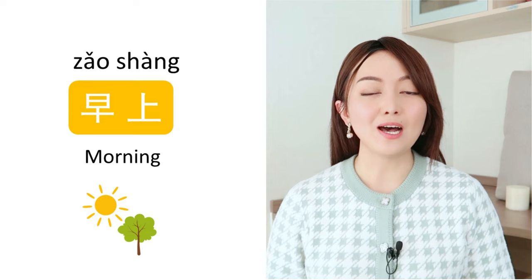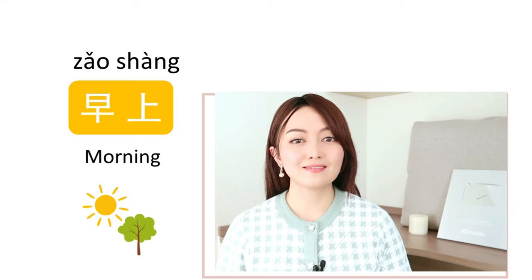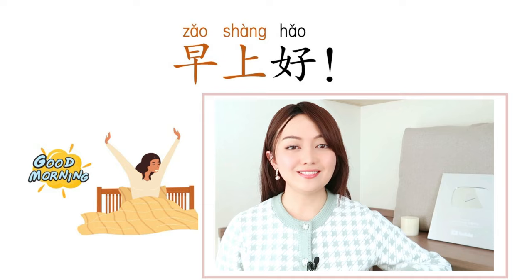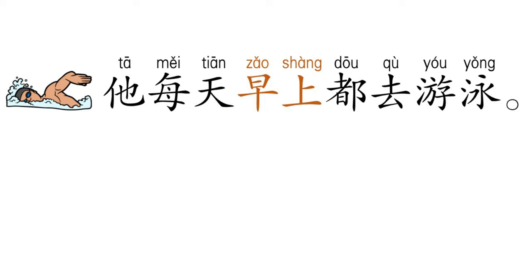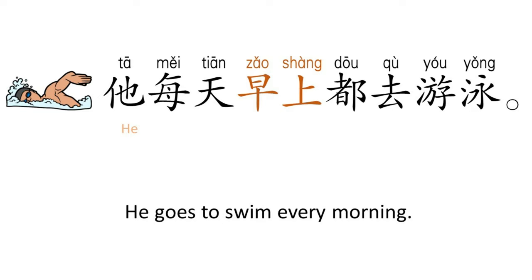好, 下一个: 早上 means 'morning.' 早上好 means 'Good morning.' 好 is 'good', so 早上好. 他每天早上都去游泳 means 'He goes swimming every morning.' 他 is 'he', 每天 is 'every day', 早上 is 'morning', 去 is 'to go'.